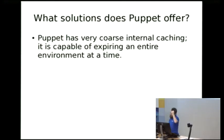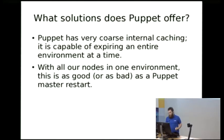Puppet itself has a very, very coarse internal caching. Puppet has the concept of environment, and you can only expire code with upstream Puppet on a per-environment basis. Since we use a single large production environment, that is just as bad as doing a full restart because when you expire the environment, you have to go and reparse all that code anyway.